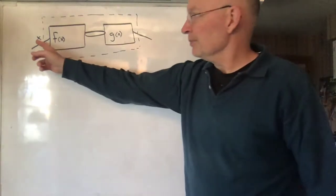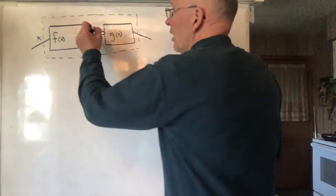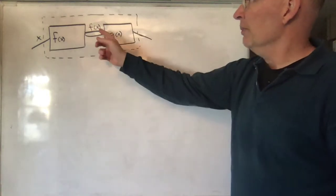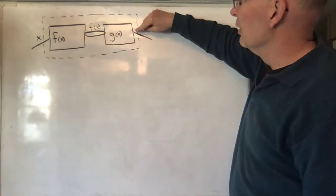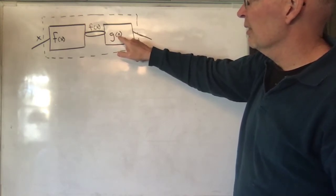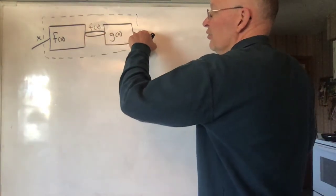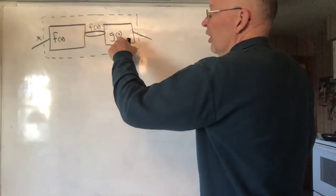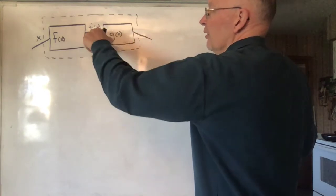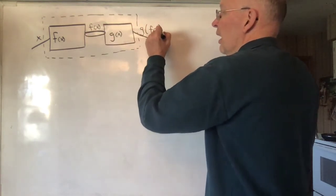Let's think about what happens. X goes in here, and F does something to it, and F of X comes out. We don't see F of X though — it goes into G. G takes anything and gives us G of that. If you put an X in, you get G of X out; a star in, G of star out; a dollar sign in, G of dollar sign out. We're going to put F of X in there, so we're going to get G of F of X out.